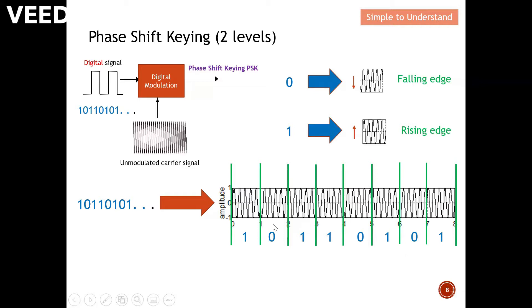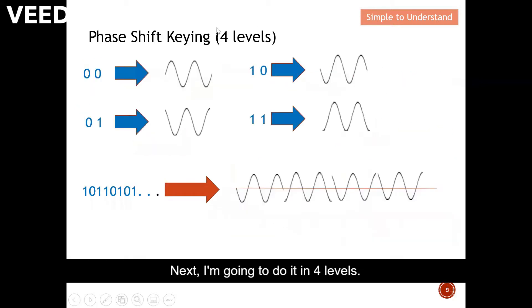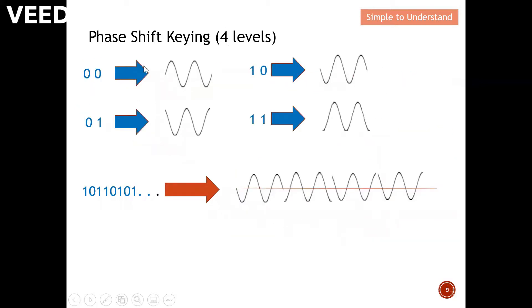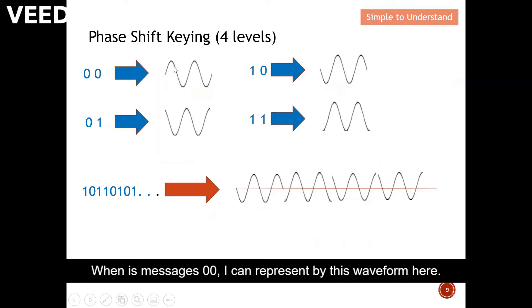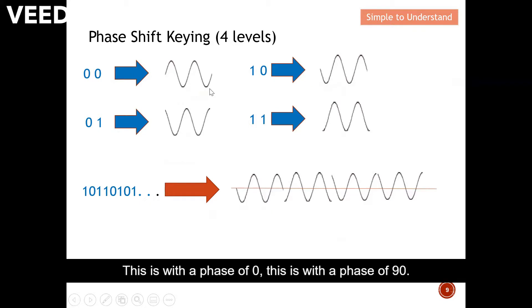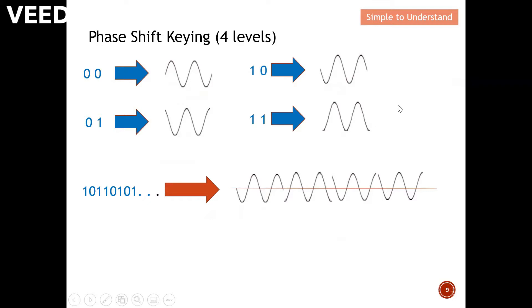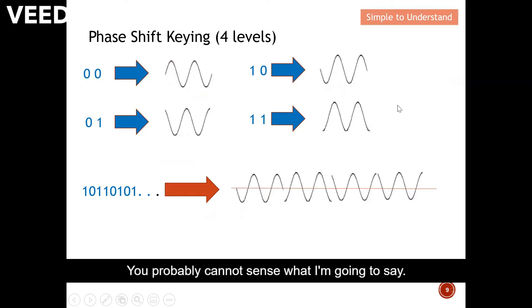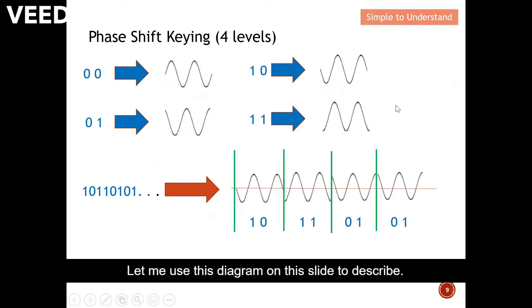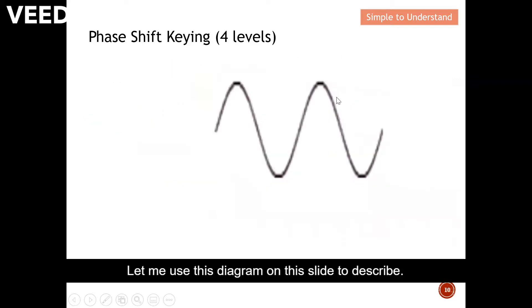Next, phase shift keying with four levels. When the message is 00 I represent it with this waveform; when the message is 01 I represent it with this waveform. These correspond to phases of 0°, 90°, 180°, and 270° respectively. Let me use this diagram to describe it more clearly.